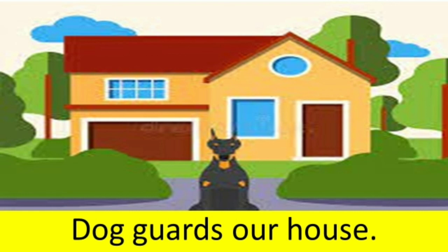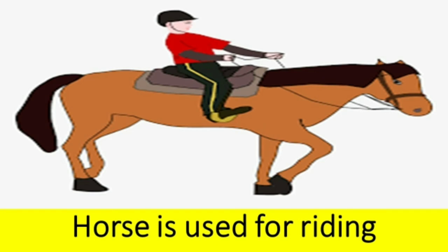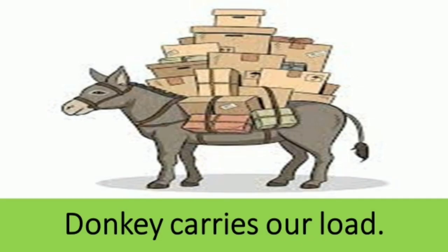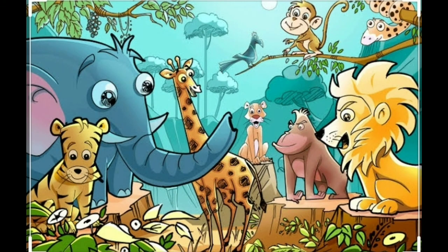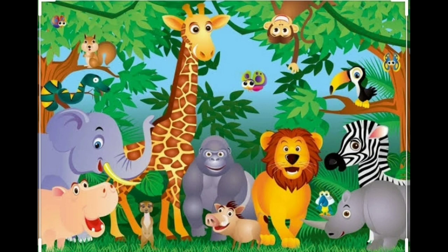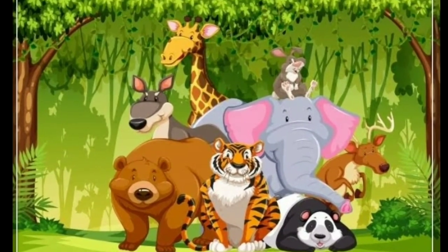Dog guards our house. Hamare gharon ki raksha karte hain dogs. Horse is used for riding. Donkey carries our load — woh hamare bojhe ko yahaan se wahaan utha kar le jaate hain. Even camels are very useful. Camel pulls carts and carries loads from one place to another. Children, now you know that animals are very useful for us and they have different food habits. I hope you liked the video. Thank you for watching.